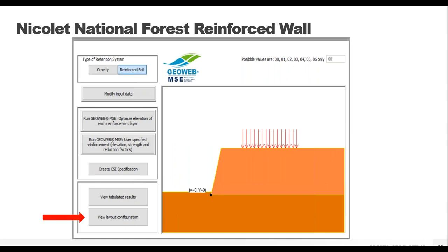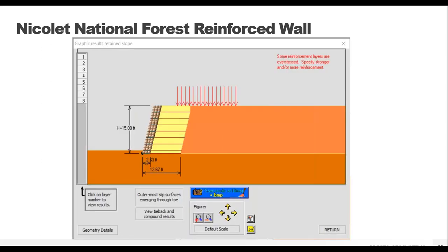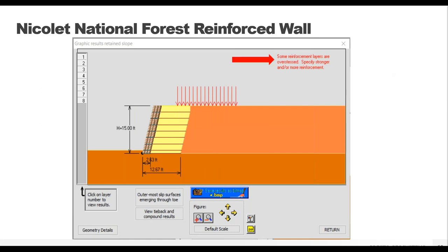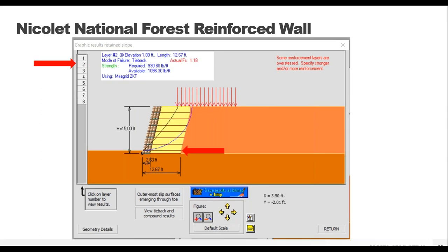A pop-up comes up telling you the analysis is running, then the OK button becomes active to finish. Back on the main screen, our results tabs are now active. Looking at the layout option first, we have our model rendered with geopanels placed for full height including embedment, and geogrid layers extending back behind the wall. But we have a problem — the program has realized that some of the reinforcement layers are overstressed and they fail. You can see that in the upper left portion of the screen. Looking at the numbers representing different geogrid layers and selecting layer two, we see the actual factor of safety is 1.18 — not bad, but we specified a minimum of 1.3, so we need to go back and change something.